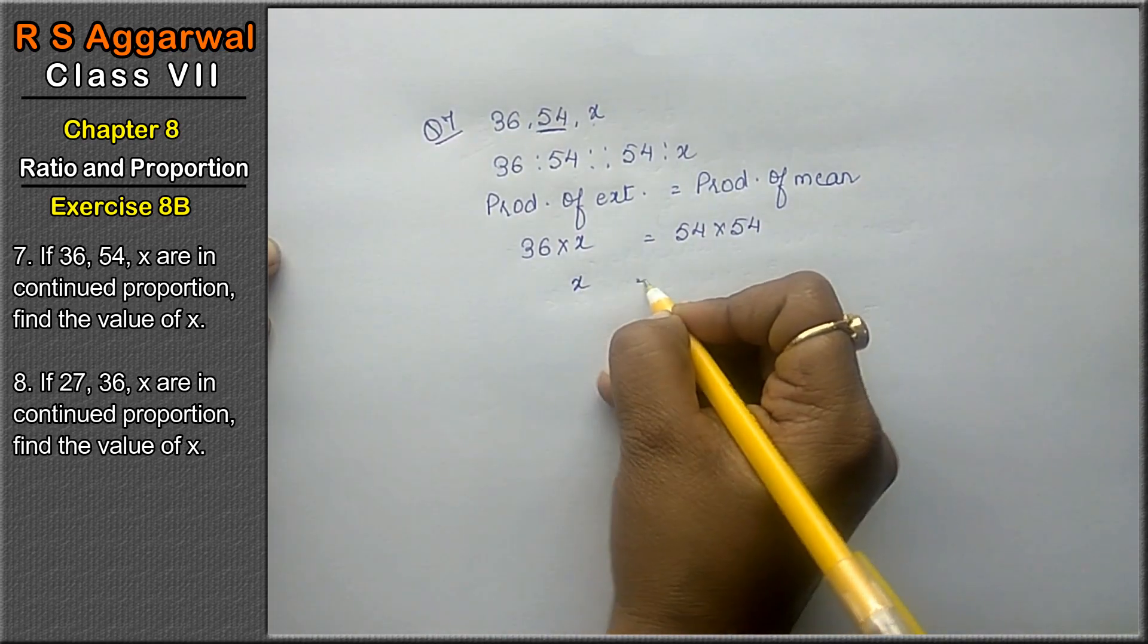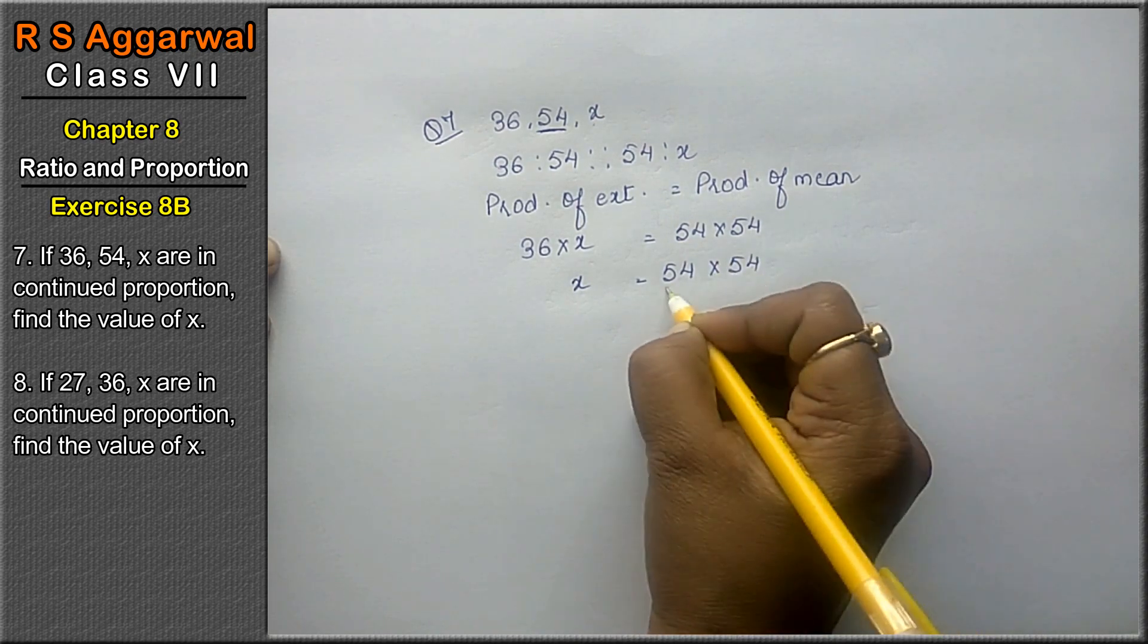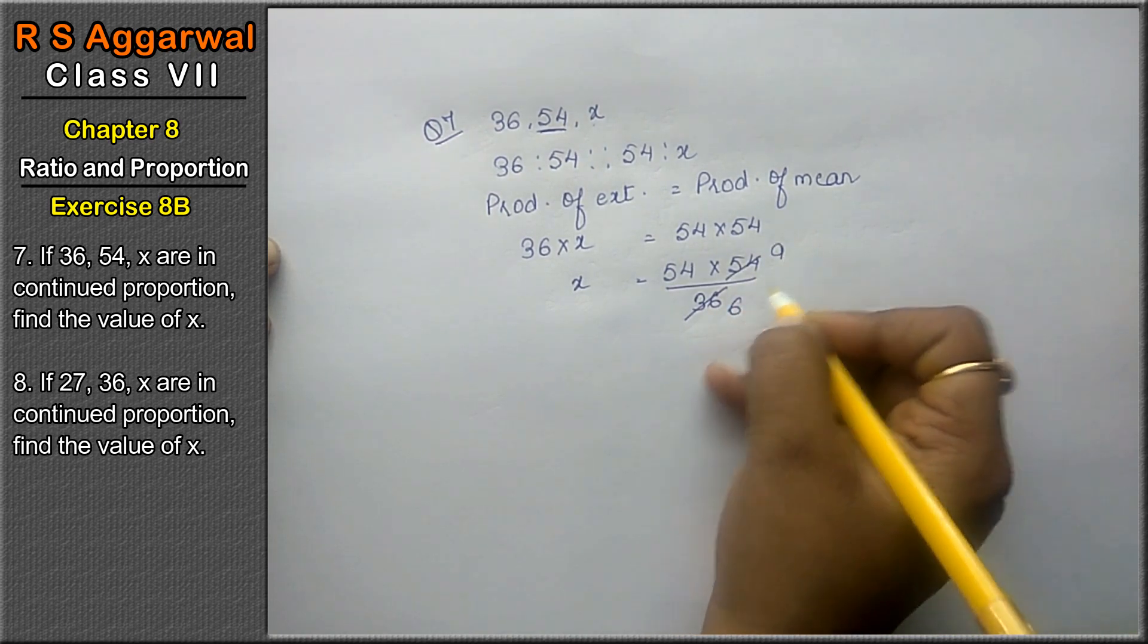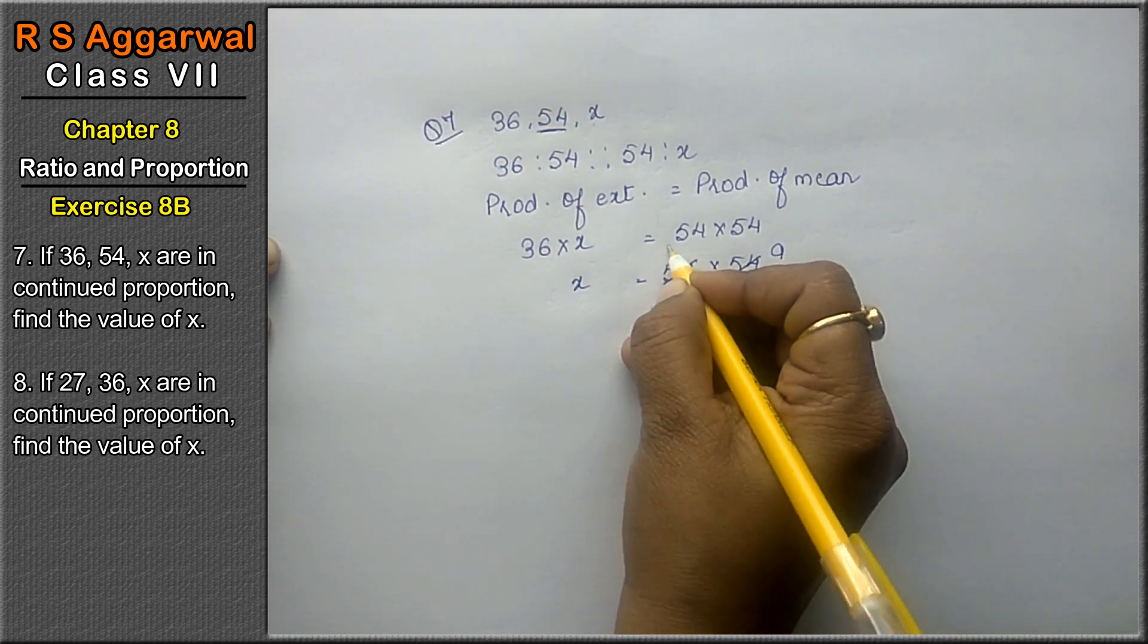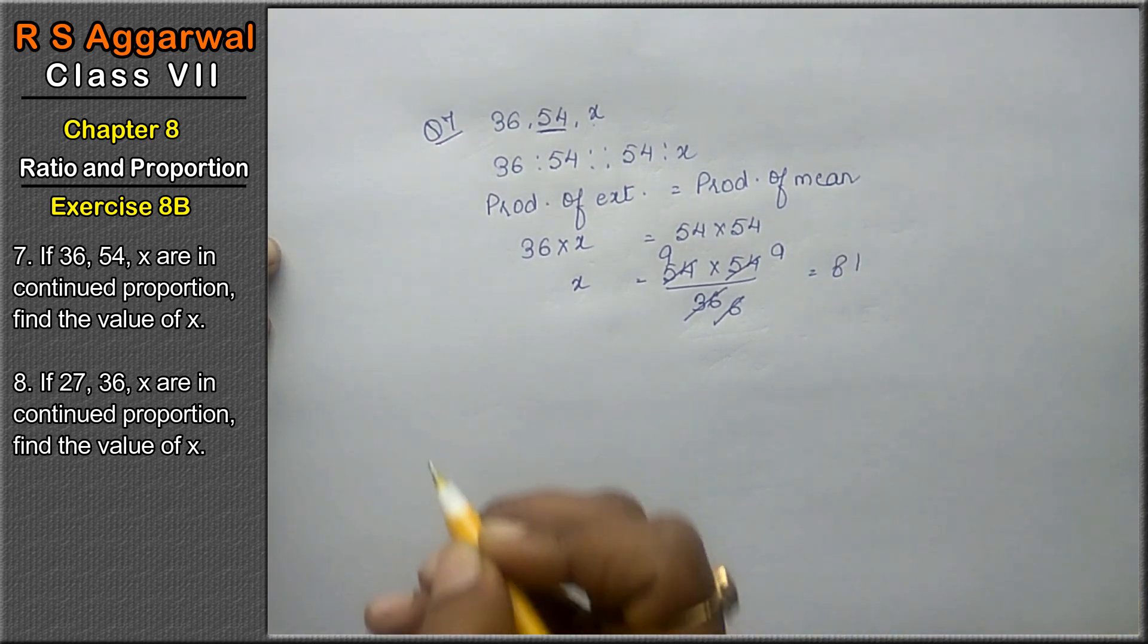x equals 54 into 54 upon 36. Now 6 sixes are 36, 6 nines are 54. Again 6 ones are 6, 6 nines are 54. 9 nines are 81 is the answer.